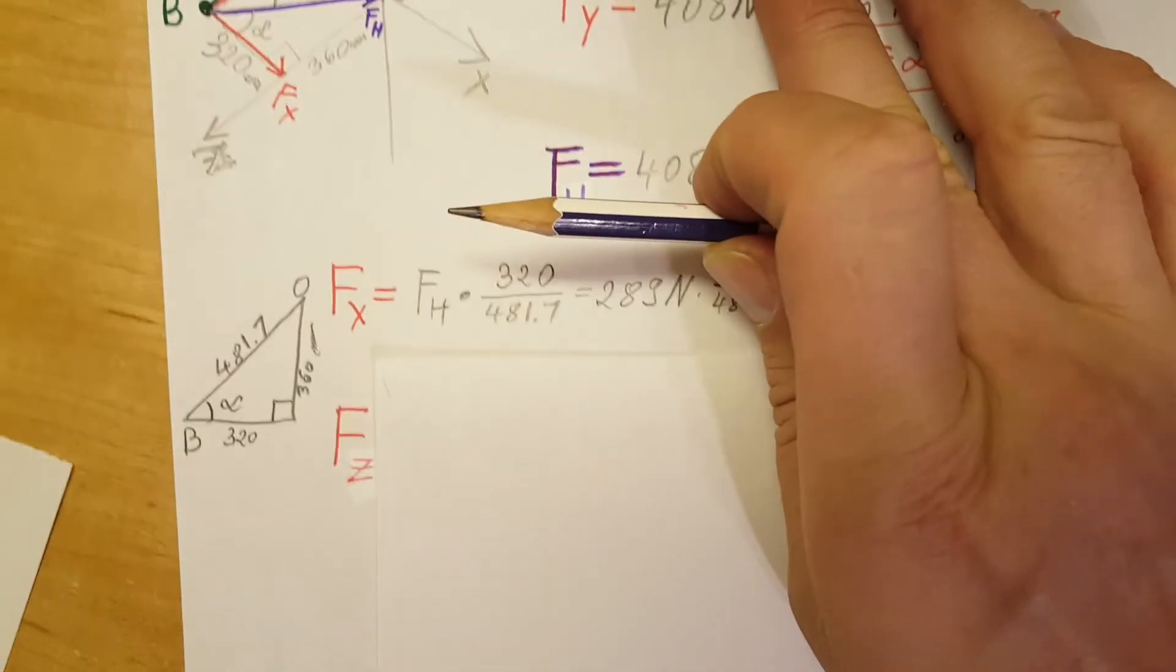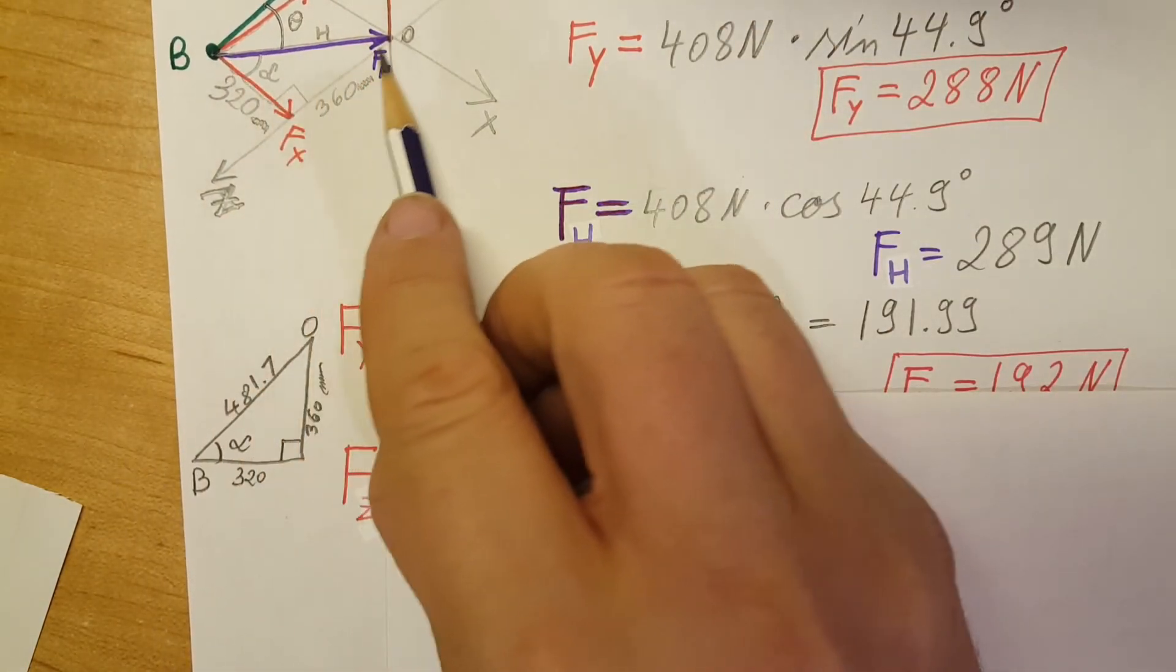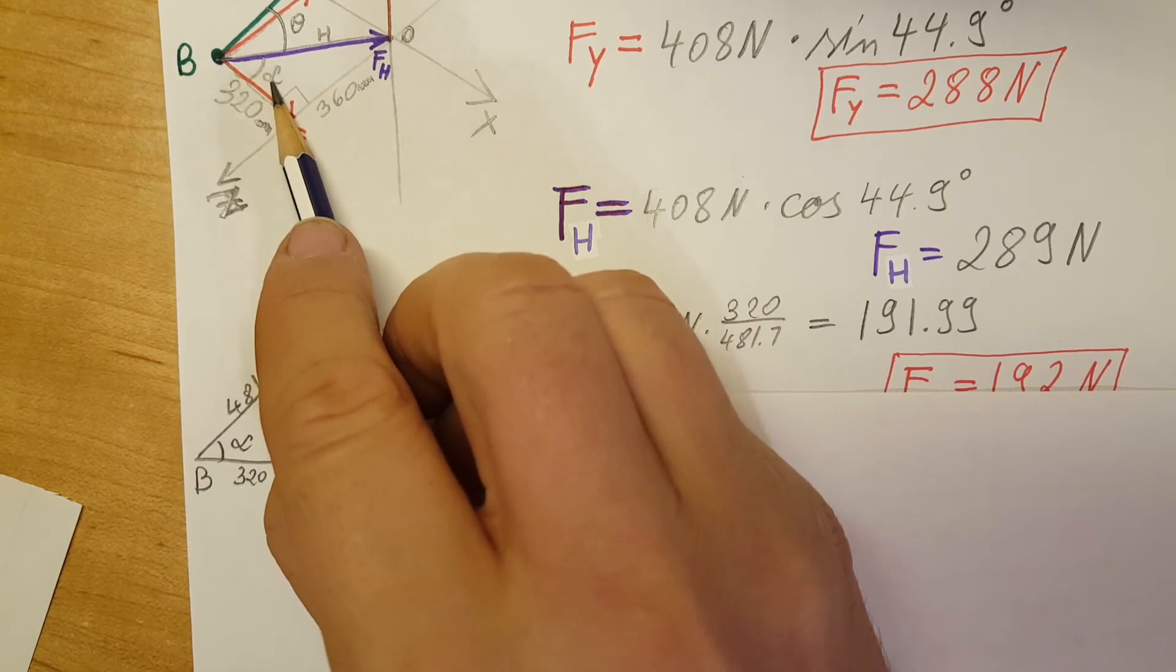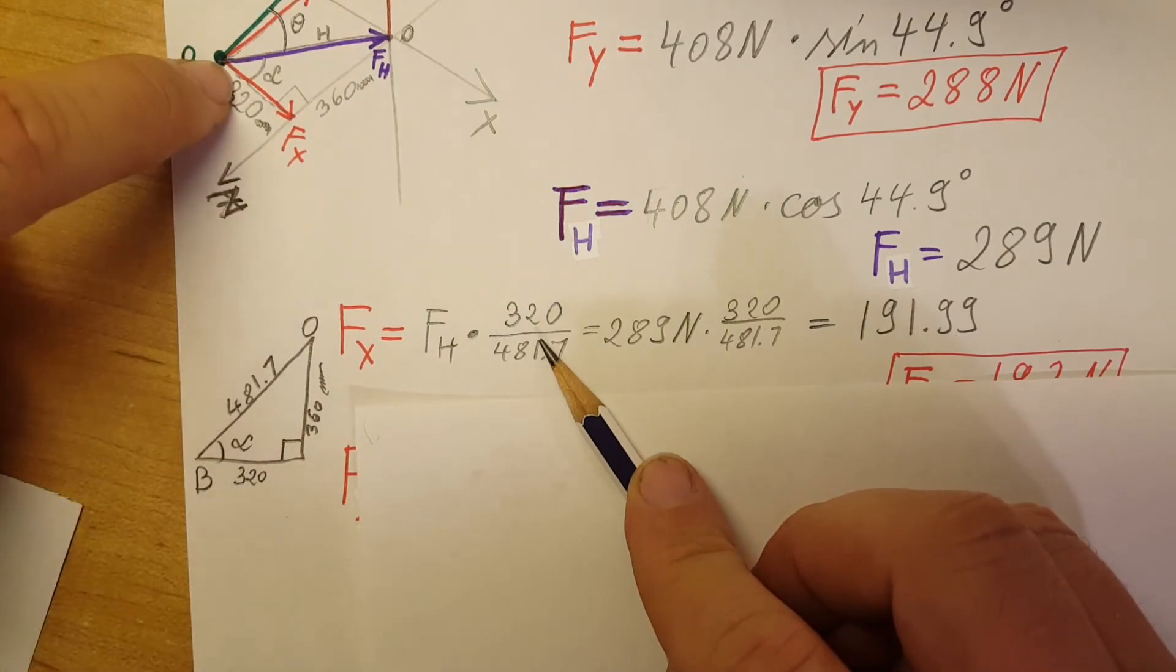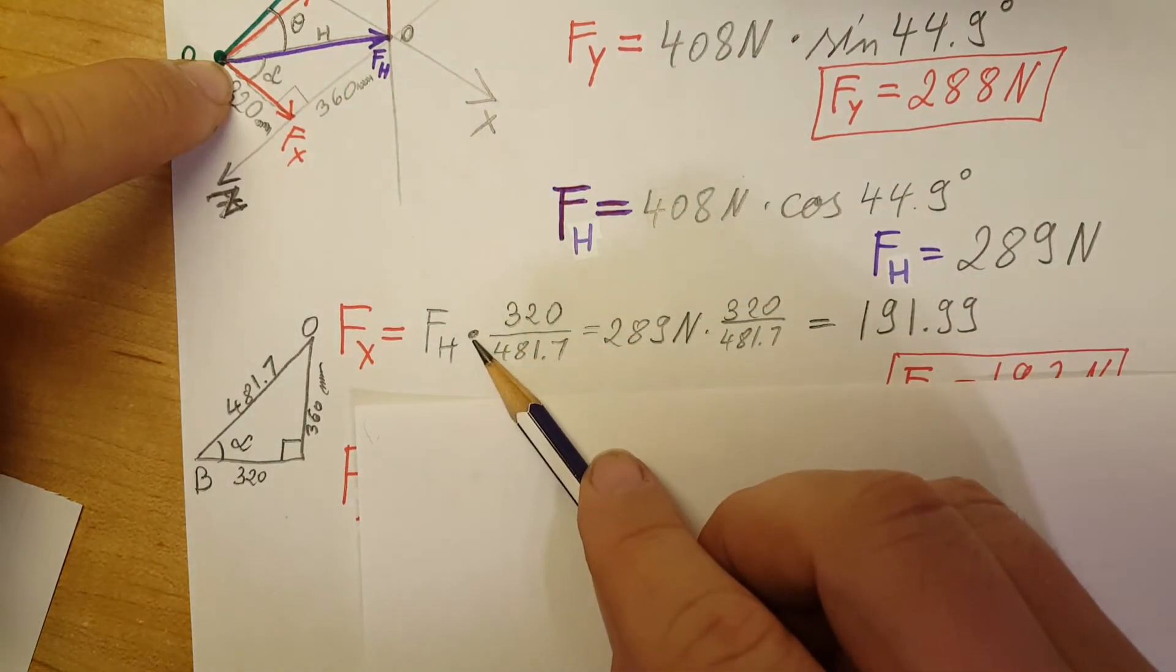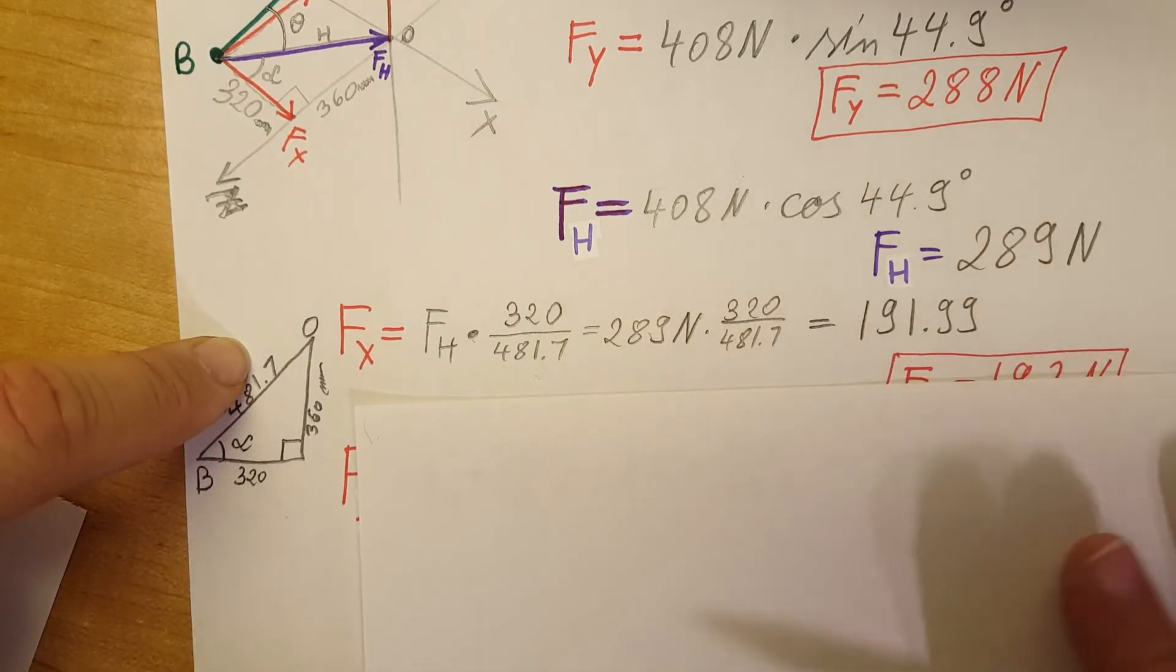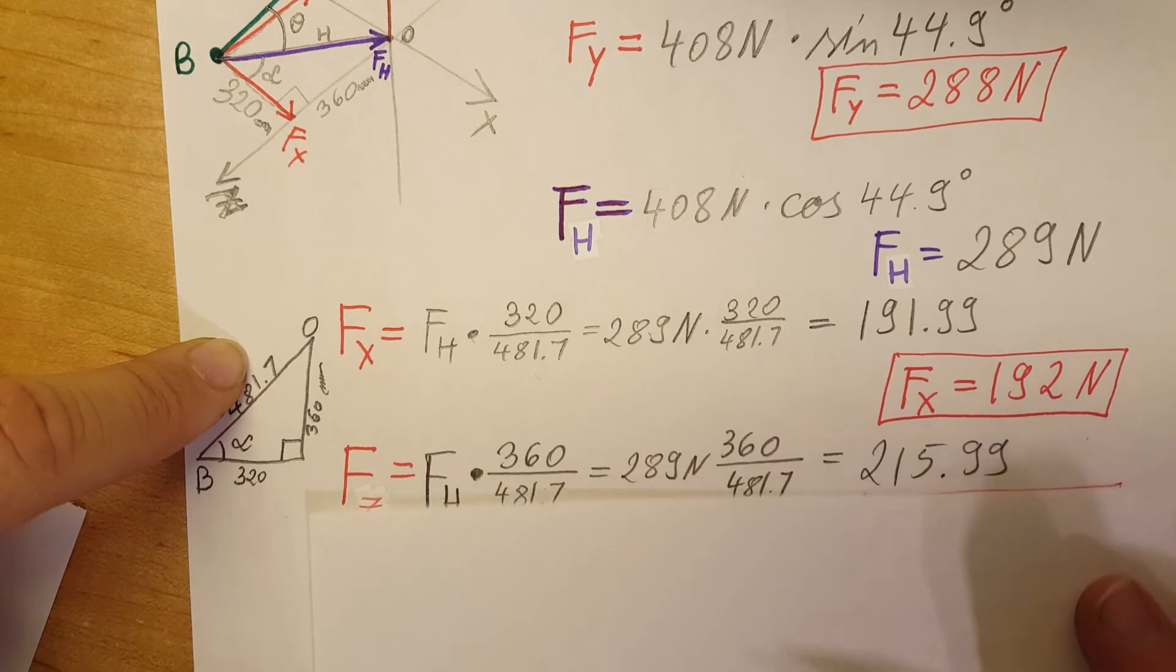So for this, FX, which we are looking for, is right here. It's going to be this component, or in our main drawing it would be this one. So in this triangle we can see that this will be the hypotenuse times the cosine of alpha. But instead of calculating alpha, let's go ahead and use the cosine ratio, which is adjacent over hypotenuse. So I'm going to plug that in: 320 over 481.7. And with a calculator we're going to find our component FX to be 192 newtons.